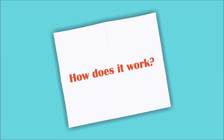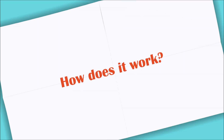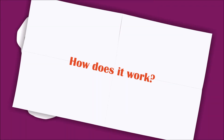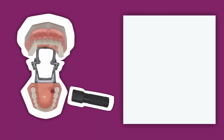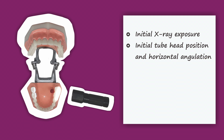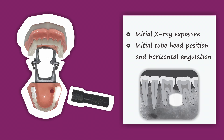The next question is, how does it work? Here is another illustration with a dental study model, a red rounded object, and a flashlight as the x-ray beam. First, we do the initial exposure with a standard tube head position and horizontal angulation. We get this on the radiograph — there is a radiopaque object lying between the root of 36 and 37.